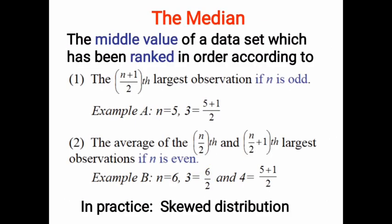The second measure of central tendency is the median. It is the middle value of a data set. Before finding the median, we must order the data set in descending or ascending order, then find the middle value. If the number of observations is odd, there is a unique value located at the middle, at position (n+1)/2, and we treat this unique middle value as the median directly.